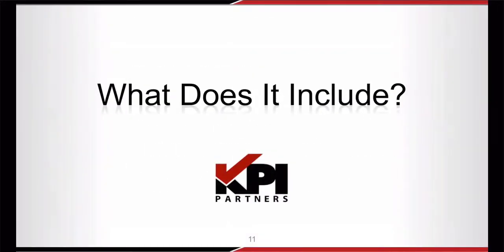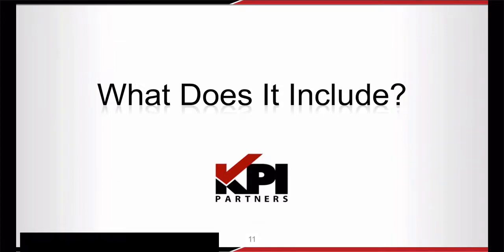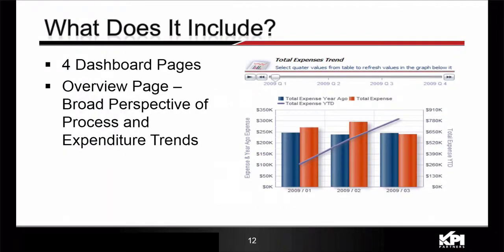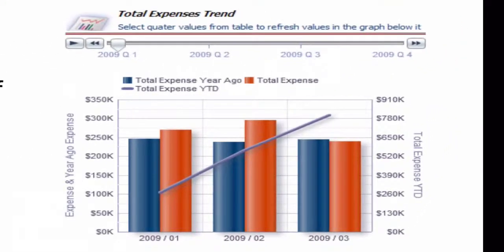The Employee Expense Module has four dashboard pages, each of which reviews employee expenses from a different perspective and with a different follow-up action in mind. The first dashboard page is the overview page and provides a broad perspective of employee expense trends as well as process trends. This page would be used by executives to understand year-over-year spending and ensure processes are efficient.